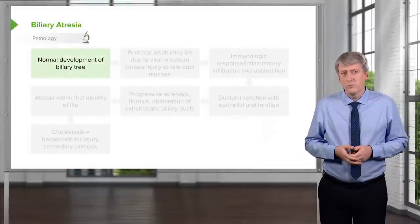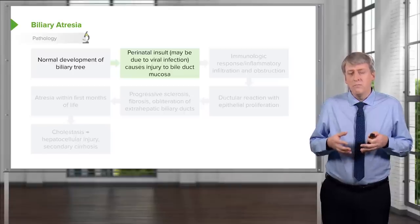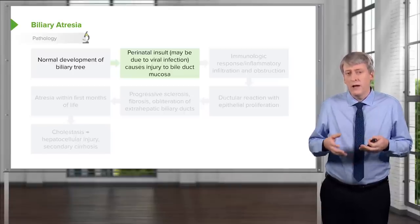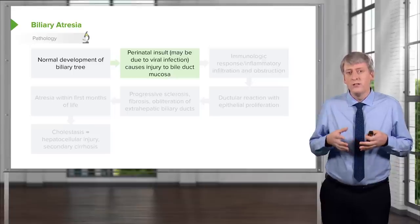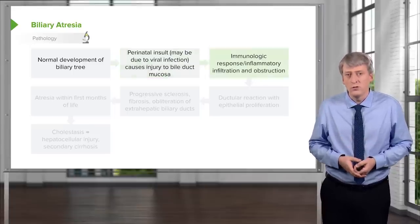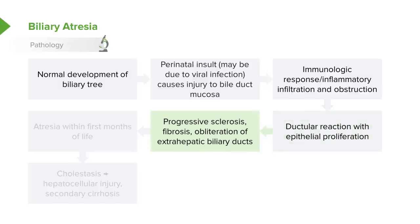Let's go through how this proceeds. Normal development of a biliary tree, and then a patient may have an insult — generally perinatally — such as a viral infection or some problem that causes the bile duct to be inflamed, some sort of injury to the mucosa. This results in an inflammatory response and an immunologic response inside the duct, leading to infiltration and obstruction. This duct reaction causes an epithelial proliferation of the cells within the duct.